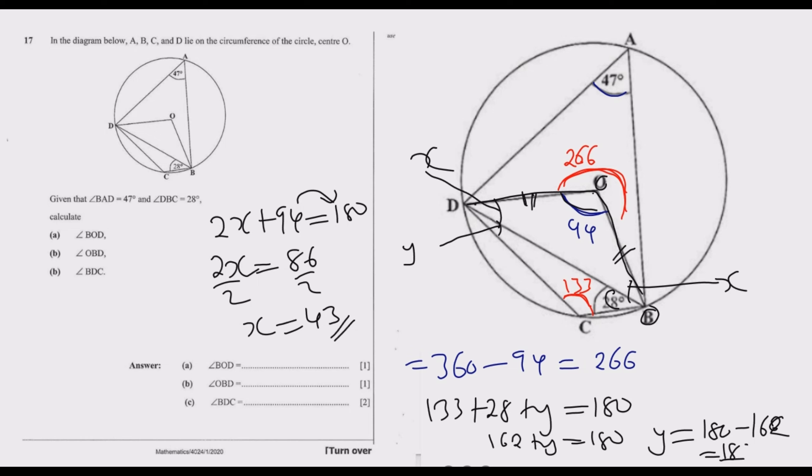Question (b): angle OBD—from O to B to D. This angle is here, which we found when solving for x. This angle is 43 degrees.